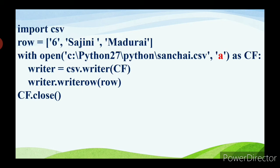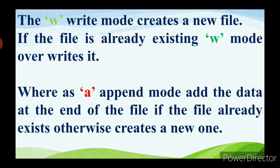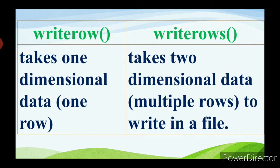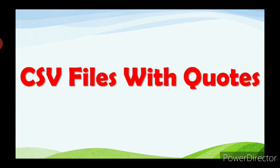Note: Write mode 'w' creates a new file; if the file already exists, 'w' mode overwrites it. The append mode 'a' adds data at the end of the file, or creates a new one if it doesn't exist. writerow takes one-dimensional data (one row) while writerows takes two-dimensional data (multiple rows) and writes them all to a file.